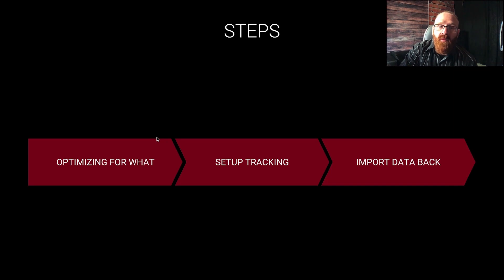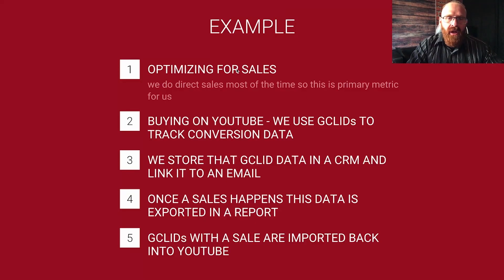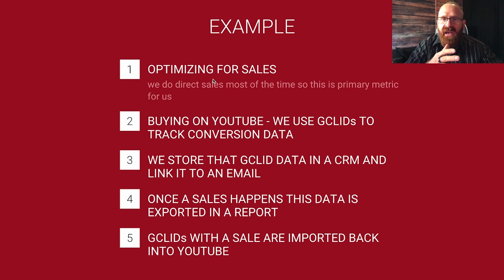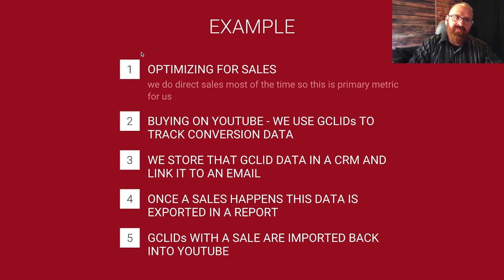The first thing we need to do is decide what we're optimizing for. You can optimize for sales, leads, opt-ins, whatever it is. Then we're going to set up tracking, and finally we'll have a way to import the data back into the AdWords platform to do the optimization. I'm going to use sales in this example because I think of it as the primary metric when you do direct sales through advertising. If you're optimizing for a lesser KPI like opt-ins, you might be solving a specific problem like conversion rates on the landing page, which is valid — but ultimately performance always relates back to actual sales.